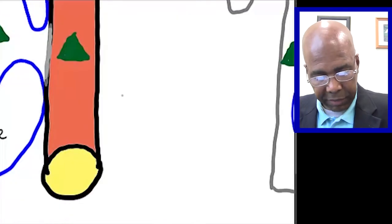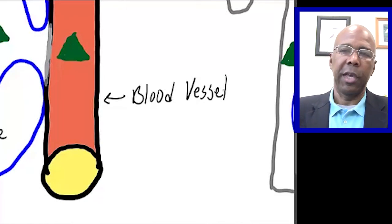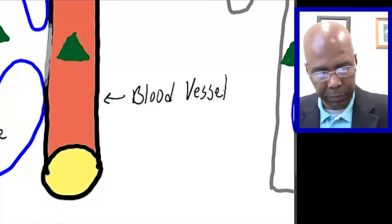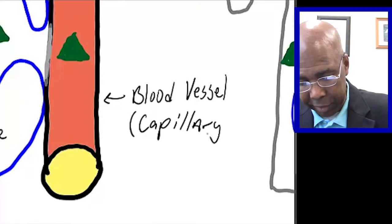Now here we have our blood vessel. What happens is the blood vessels actually pass through the endocrine tissue and form very small blood vessels called capillaries, which have a very thin membrane that allows the hormone to pass into the bloodstream. So these are capillaries.